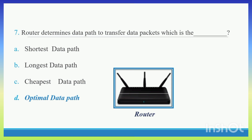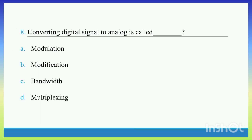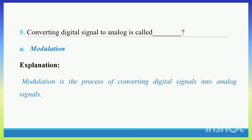Question 8. Converting digital signal to analog is called. Option A: Modulation. Option B: Modification. Option C: Bandwidth. Option D: Multiplexing. Converting digital signal into analog is called Modulation. Right Answer A: Modulation. Explanation: Modulation is the process of converting digital signal into analog signals.